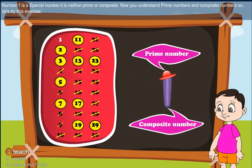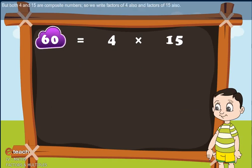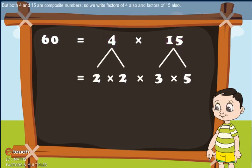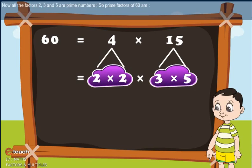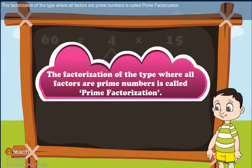Now you understand about prime numbers and composite numbers. Let's try this exercise. Prime factorization. From the above example, we know that 4 and 15 are factors of 60. But 4 and 15 are both composite numbers, so we write the factors of 4 and the factors of 15 also. Now the factors 2, 3, and 5 are all prime numbers. So the prime factors of 60 are 2, 3, and 5. The factorization where all factors are prime numbers is called prime factorization.